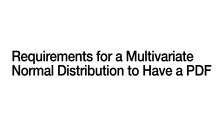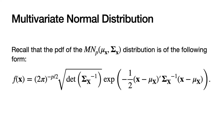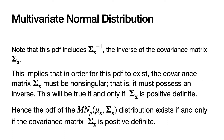Now let's take these concepts and look at requirements for a multivariate normal distribution to have a PDF. Recall from a previous lecture video that the PDF — the probability density function — of the multivariate normal distribution of rank P with mean vector mu sub x and covariance matrix CAP-SIG sub x has a specific form. The thing I want to point out is that the multivariate normal distribution has a PDF that incorporates the inverse of the covariance matrix, which shows up in two spots.